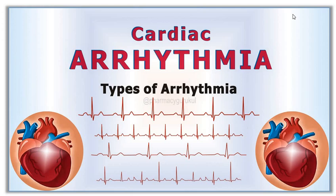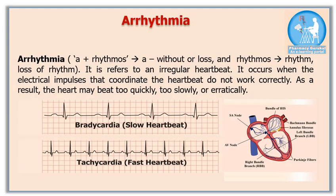In this video I will discuss cardiac arrhythmia and its types. The word arrhythmia comes from the Greek language and is a combination of two words: 'a' meaning loss and 'rhythmos' meaning rhythm. So the actual meaning of arrhythmia is loss of rhythm.